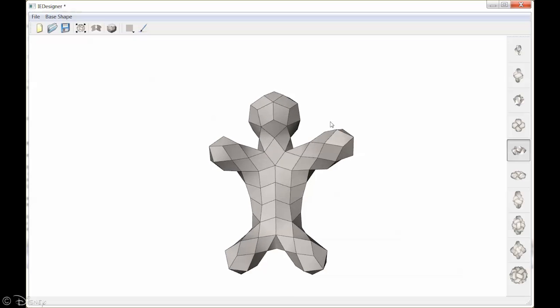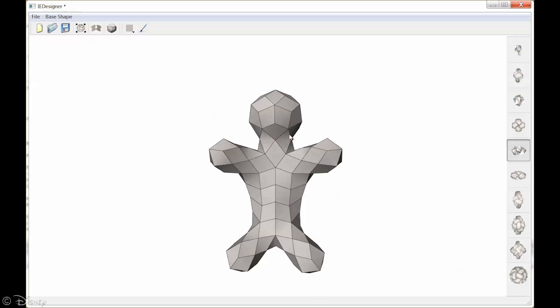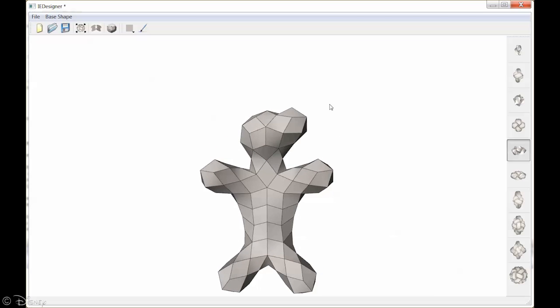Here the designer changes the brush in order to create more slender legs. We keep a history of all edits such that inadvertent operations can be easily undone.